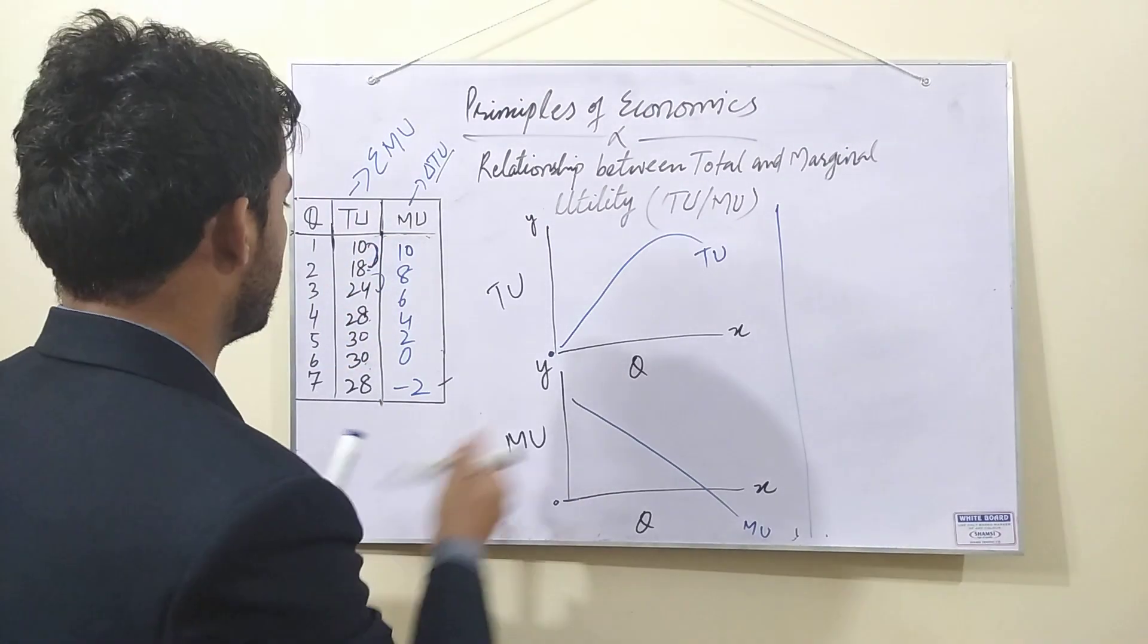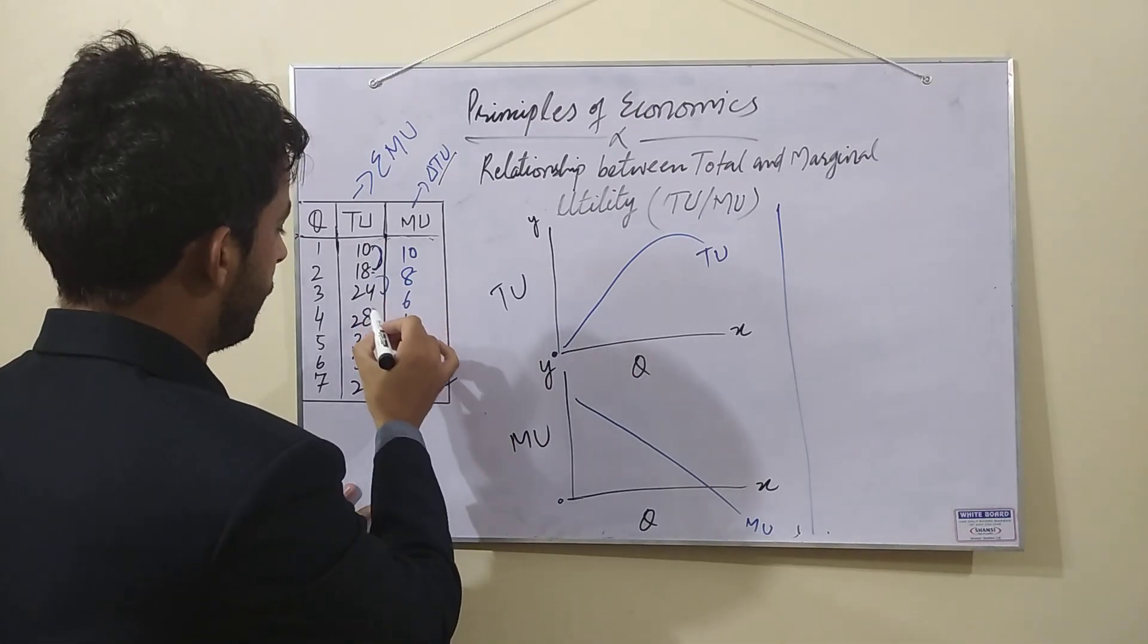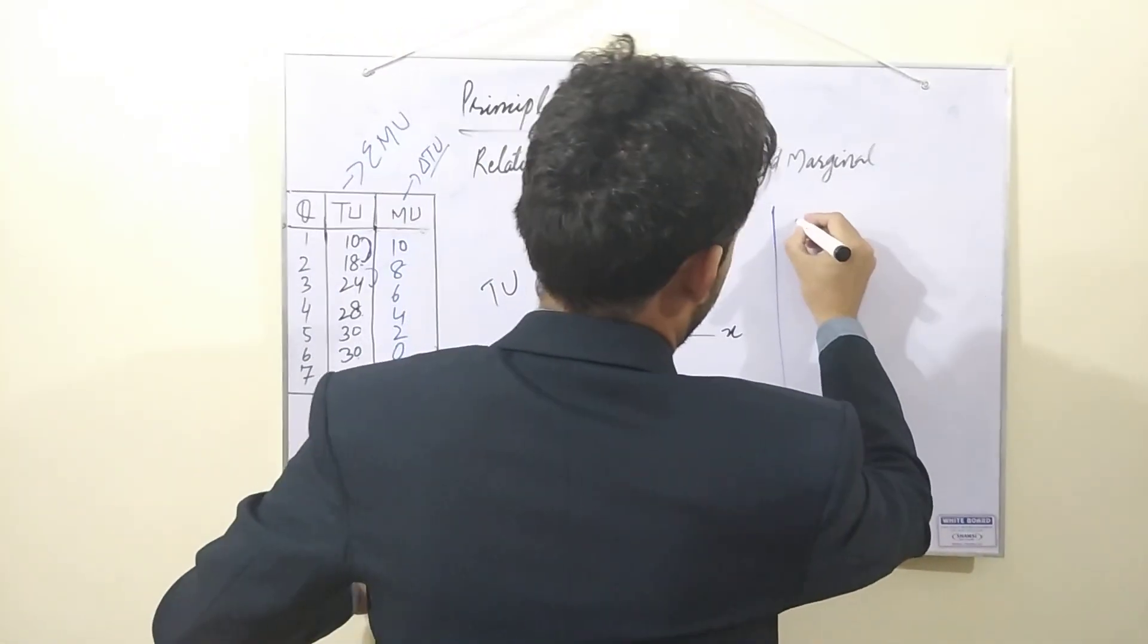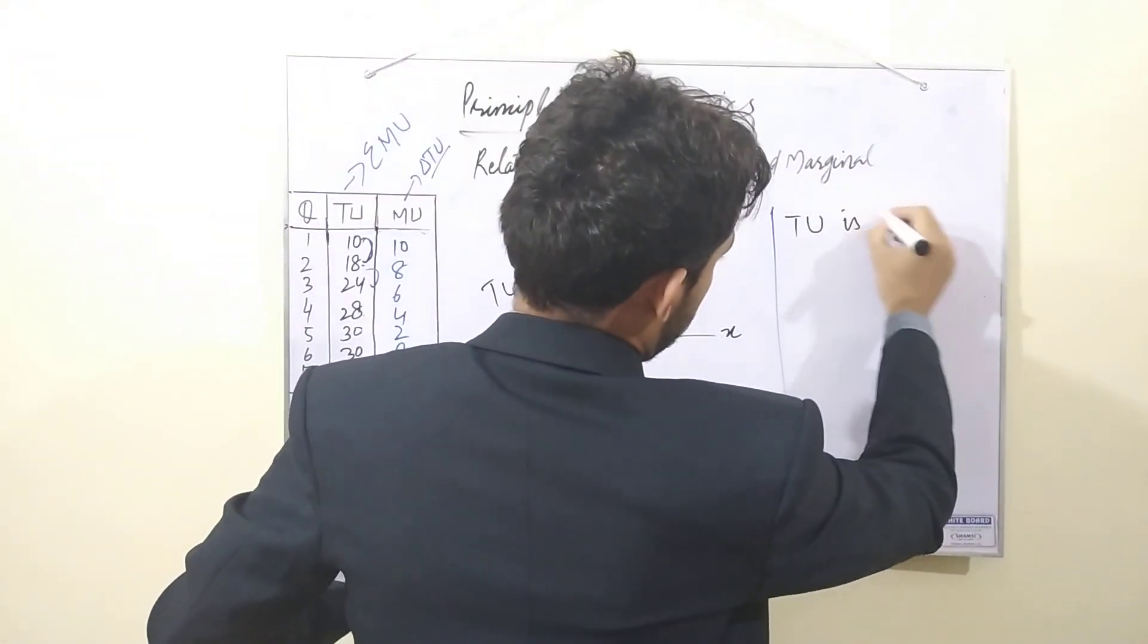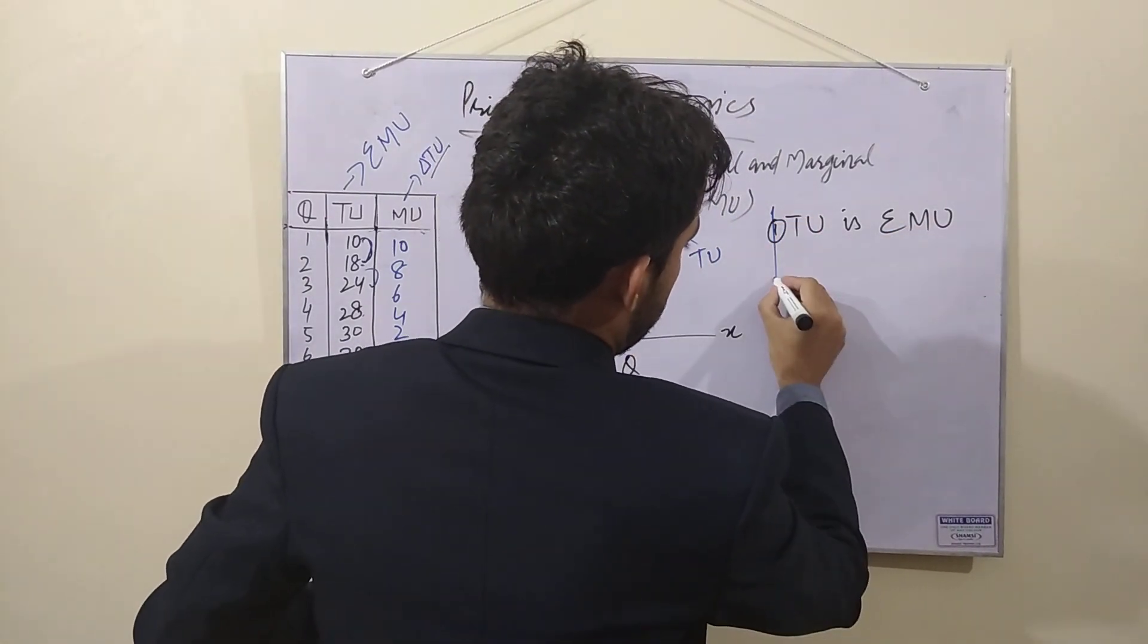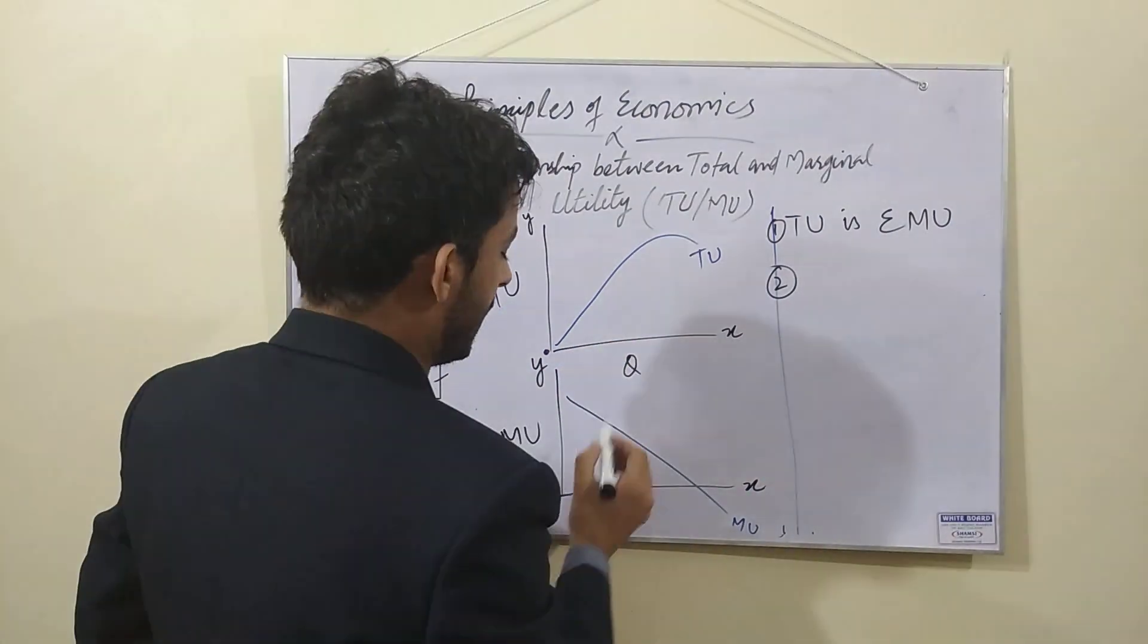Before that, first relationship. What will happen? Total utility, how to calculate marginal utility? Add. How to calculate? 10 plus 8 is 18. 18 plus 6 is 24. 24 plus 4 is 28. Total utility is the sum of marginal utility. This is the first relationship.